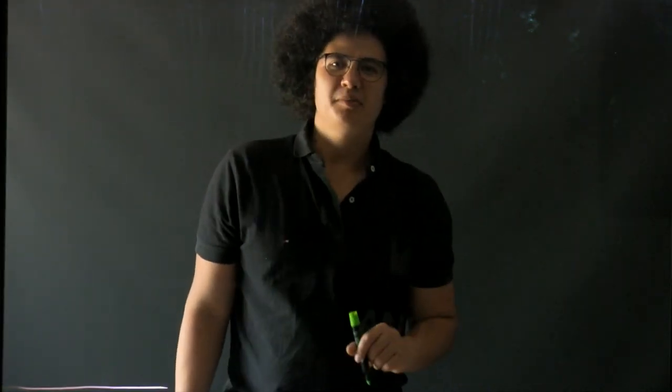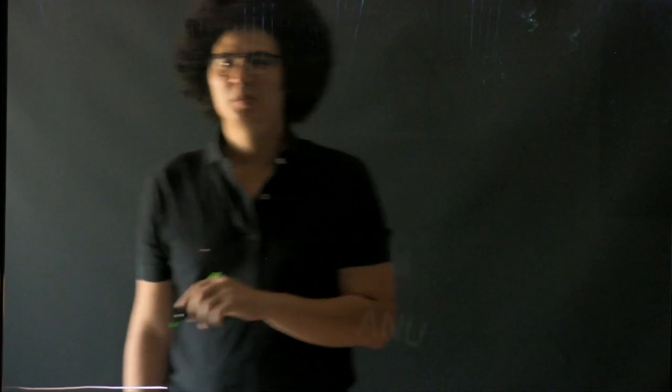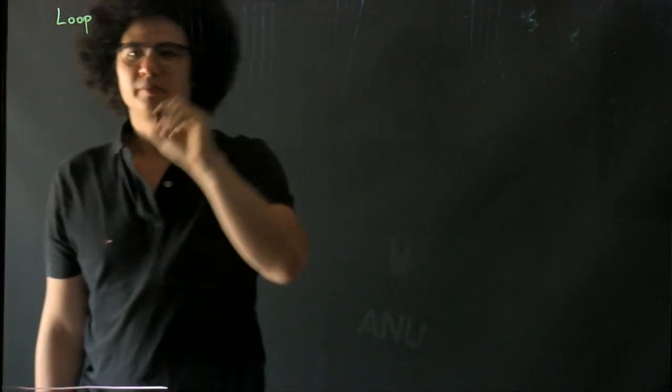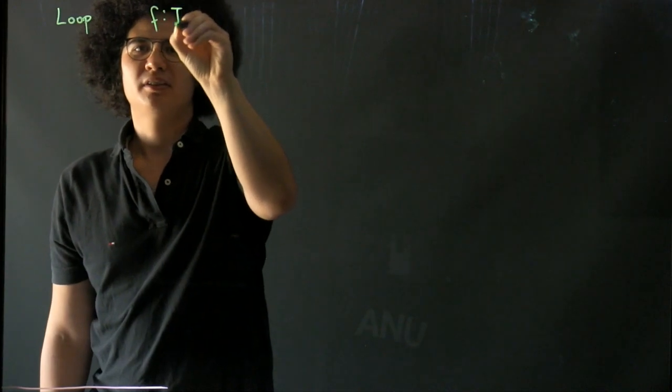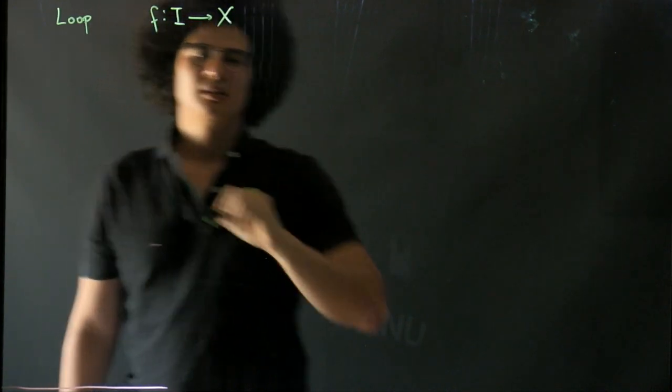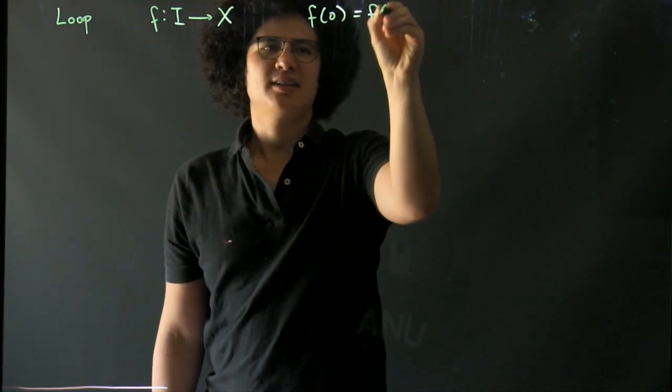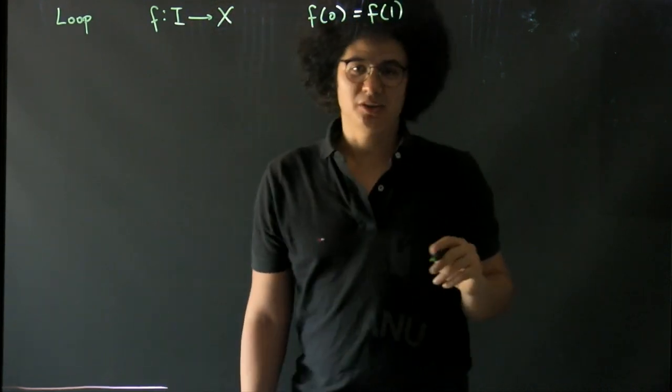We're almost ready to define the fundamental group of a space. We have one more definition first, and that is a loop is a path in a space such that it starts and ends at the same point, hence the word loop.